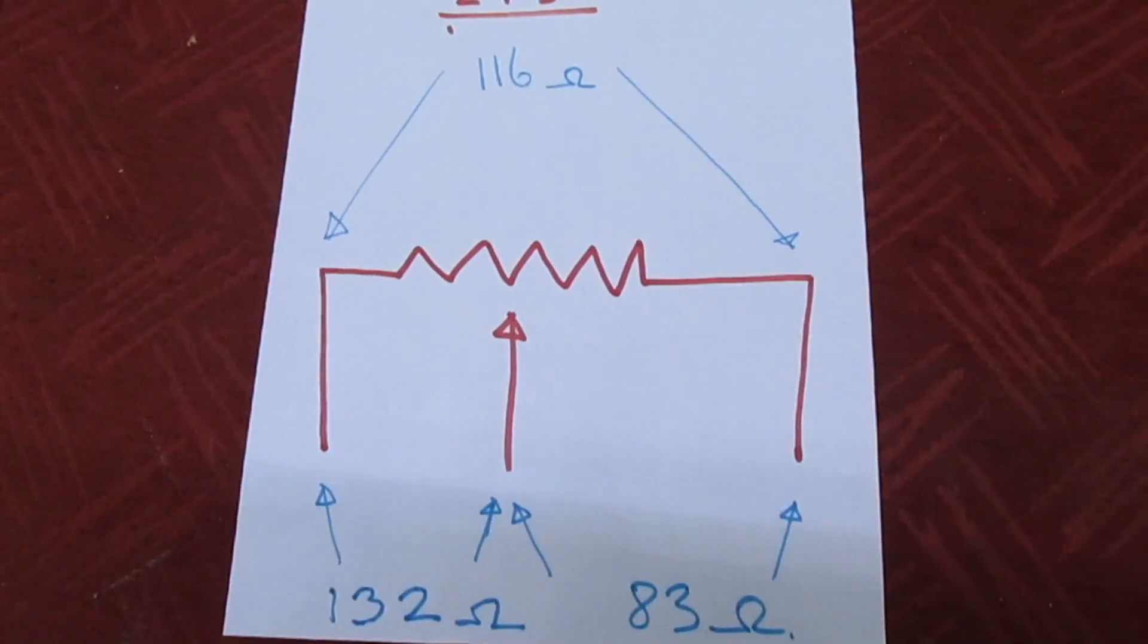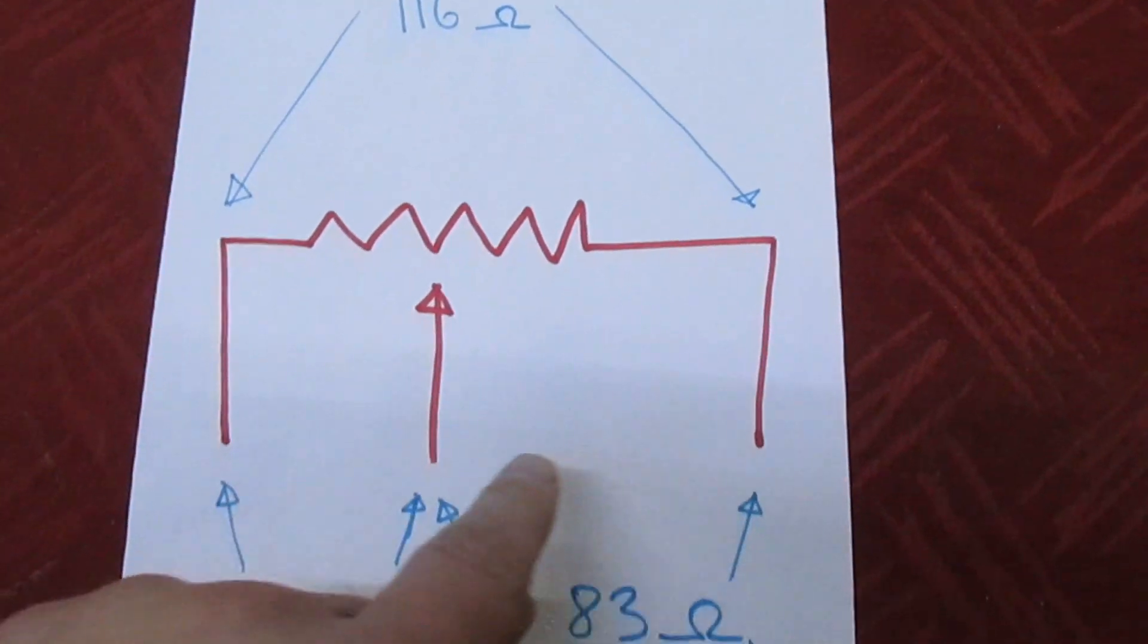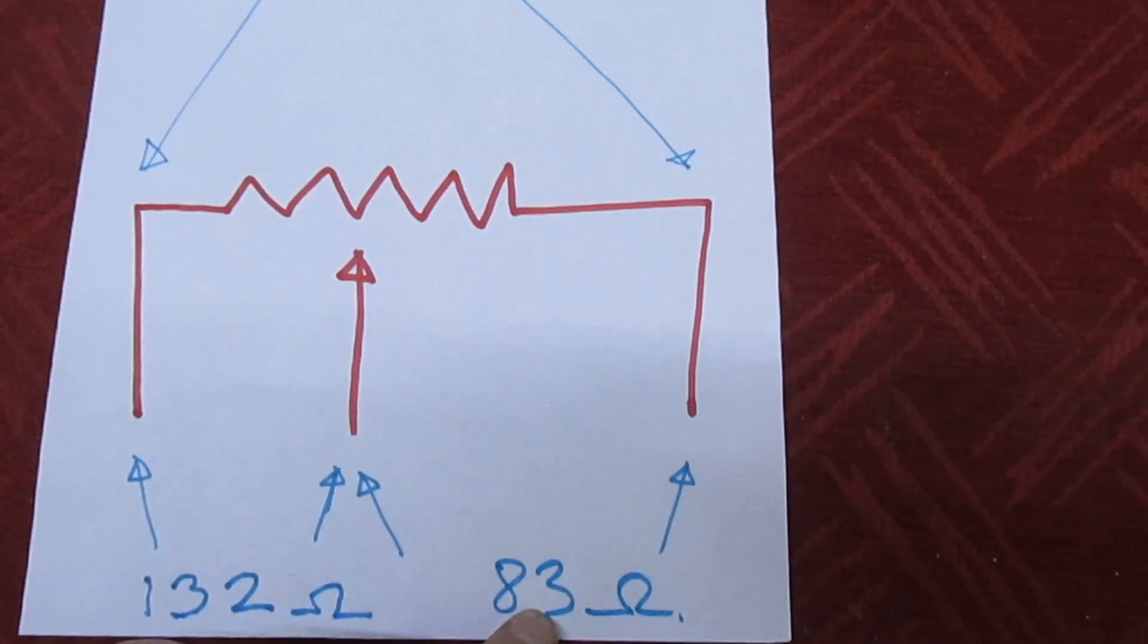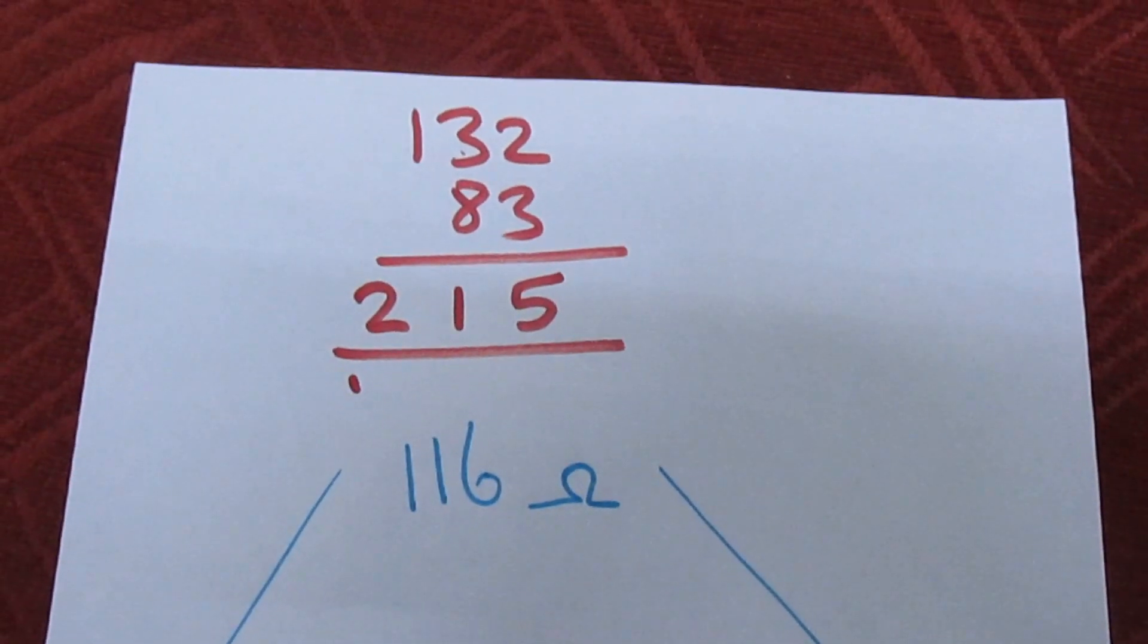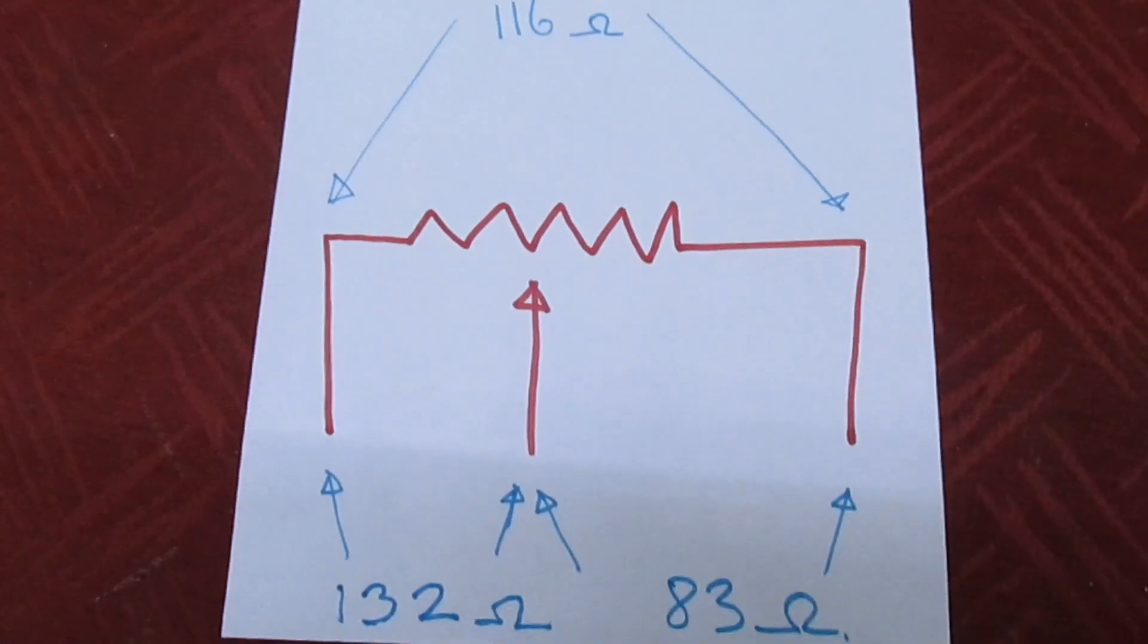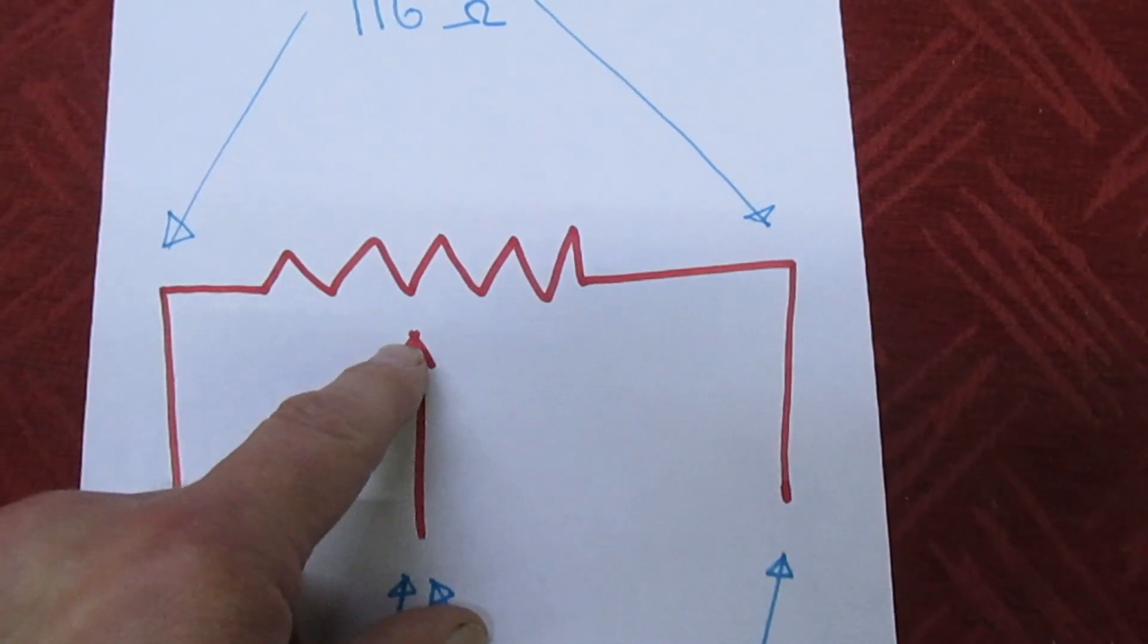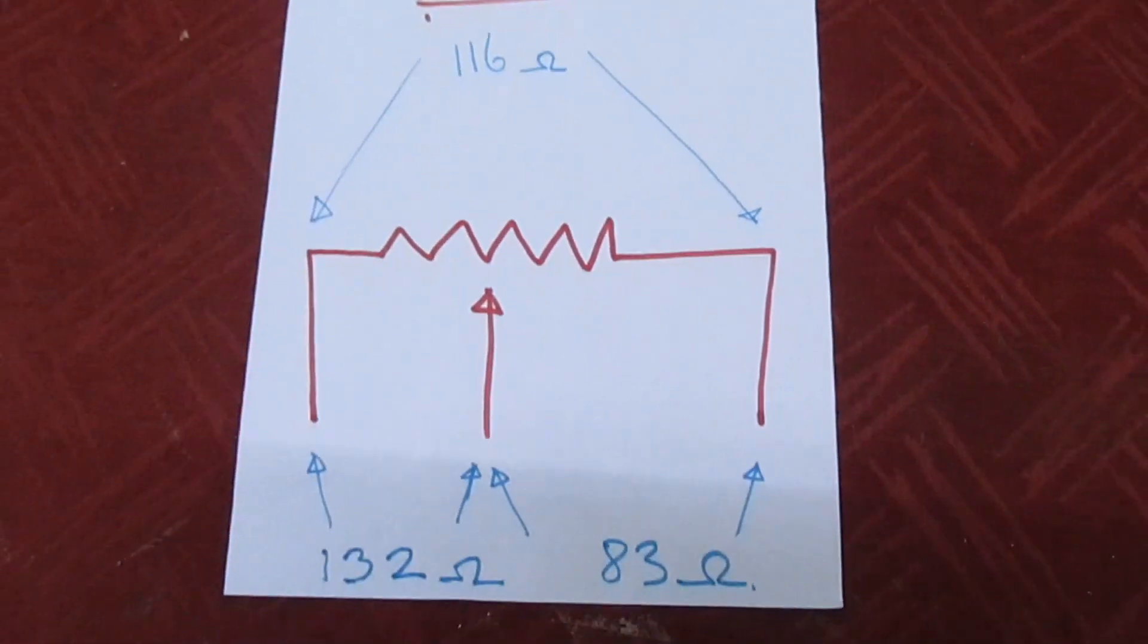If you look at the diagram I've drawn up now, 116 ohms end to end, from the wiper to that end is 132 ohms, and from the wiper to that end is 83 ohms. If you add them two together, we're actually measuring 215 ohms from this faulty pot. So obviously the wiper in the middle has some sort of oxidized contact which is causing a resistance between there and there, and that was the fault on it.